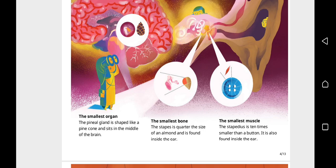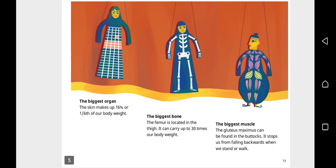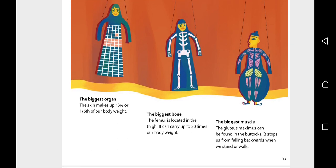The biggest organ, the skin, makes up sixteen percent or one-sixth of our body weight. The biggest bone, the femur, is located in the thigh. It can carry up to thirty times our body weight. The biggest muscle, the gluteus maximus, can be found in the buttocks. It stops us from falling backwards when we stand or walk.